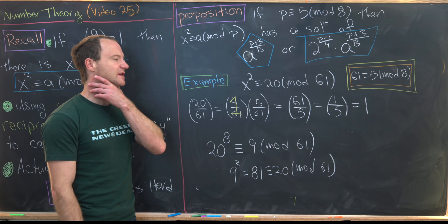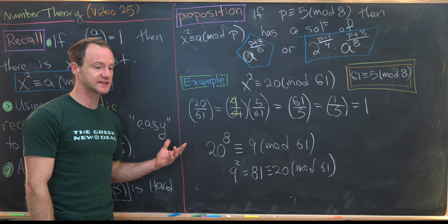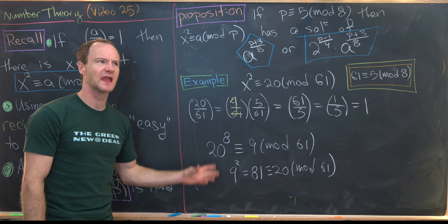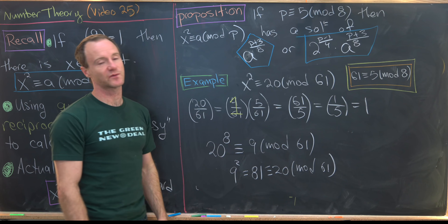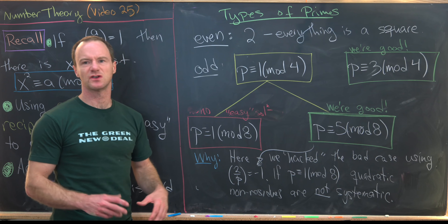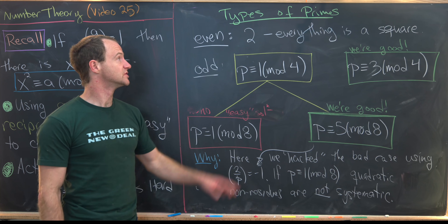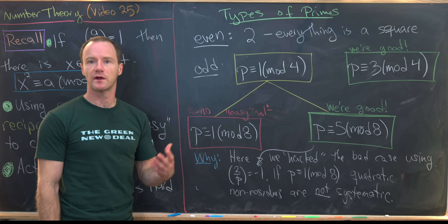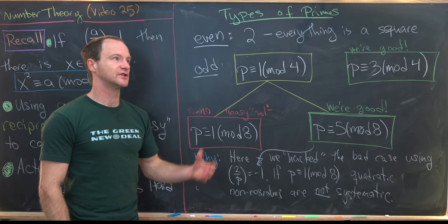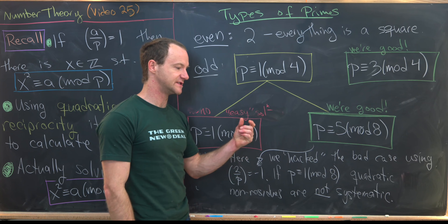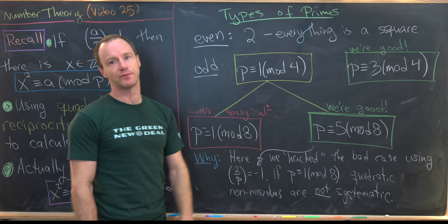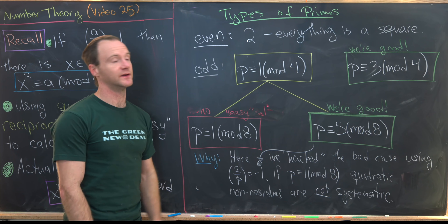Let's summarize what we've seen in this video. For even primes — there's only one, p = 2 — there's really only one quadratic residue, which is 1, and 0 is also a perfect square mod 2, so everything is essentially a square and there's no worry.